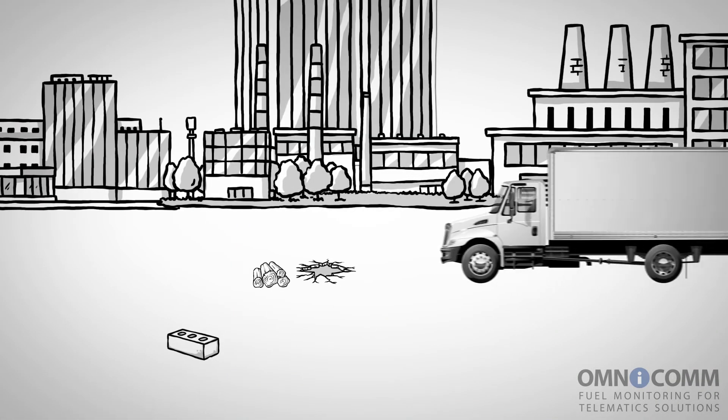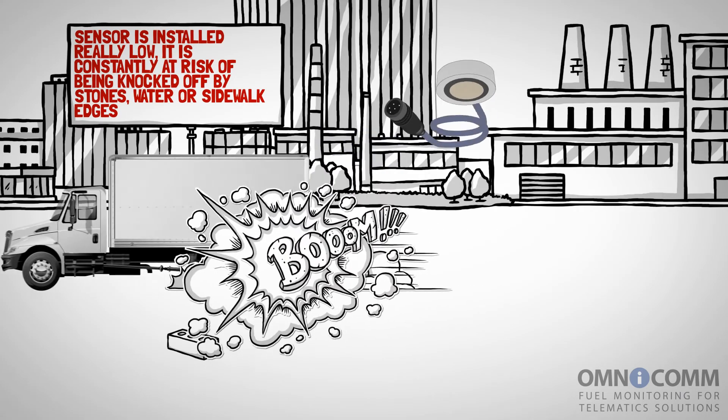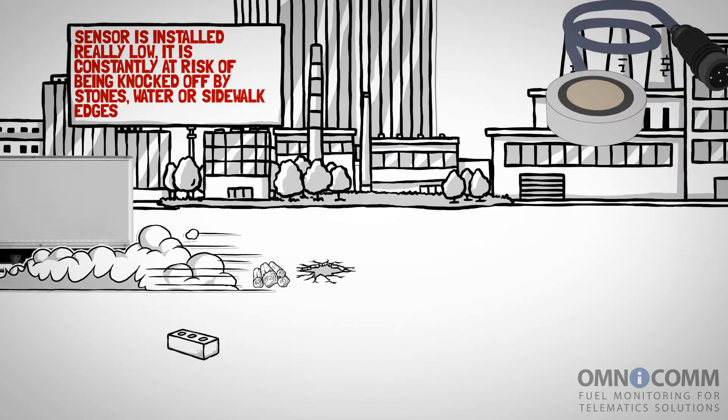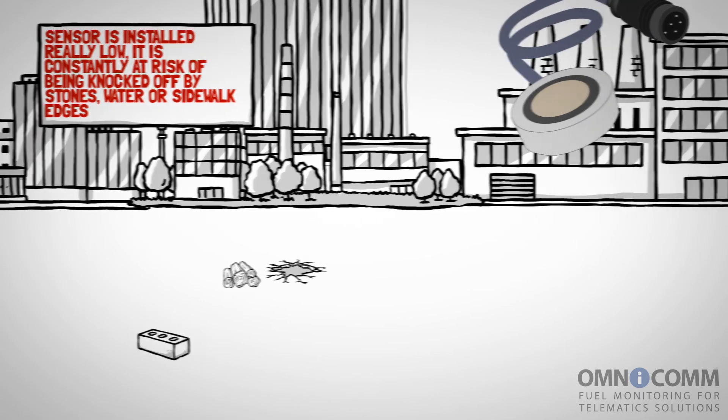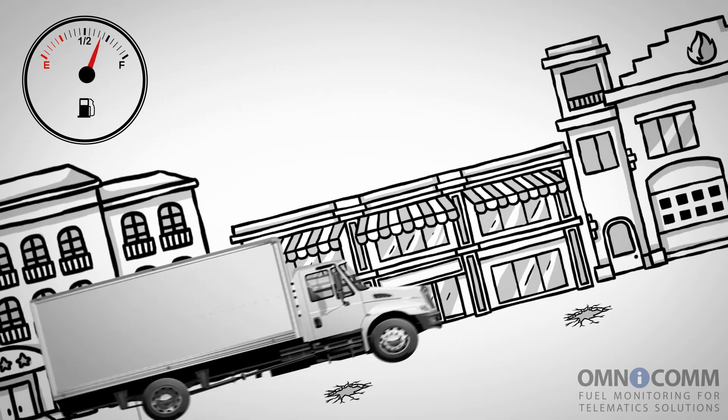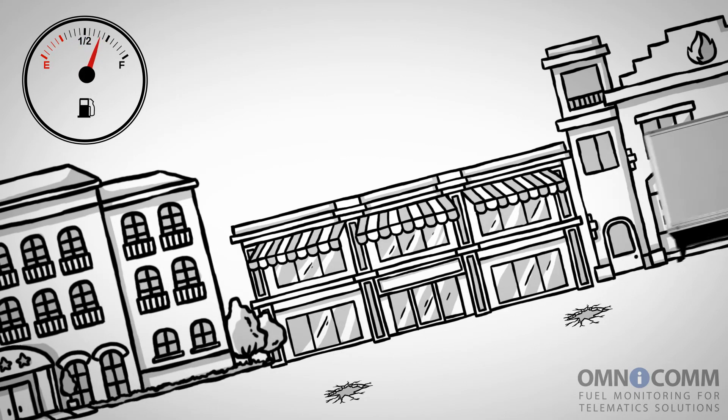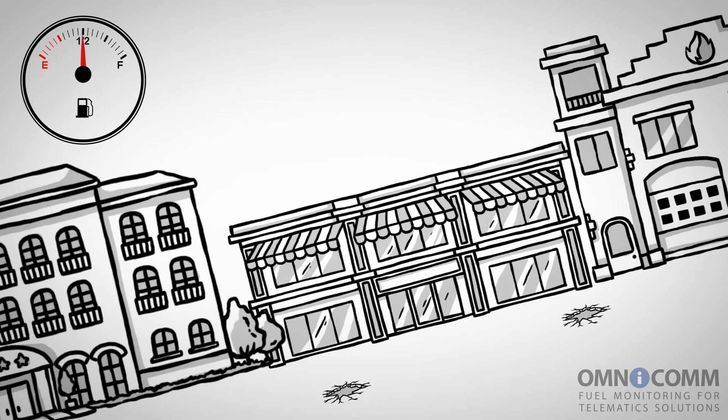Third, as this sensor is installed really low, it is constantly at risk of being knocked off by stones, water, or sidewalk edges. Drivers often try to get rid of the sensor, blaming it on the state of the road. The major pitfall, though, is the actual measurement accuracy. Whenever the road is bumpy or downhill or uphill, the acoustic signal gets lost because of the tilt of the fuel tank.